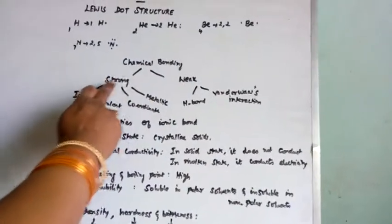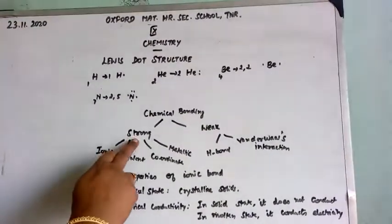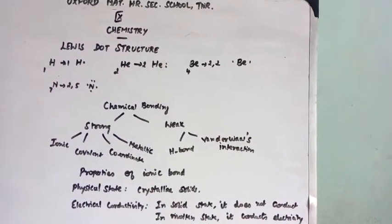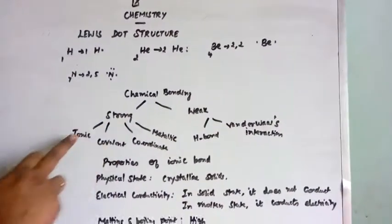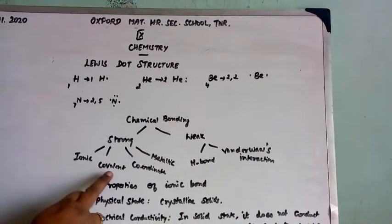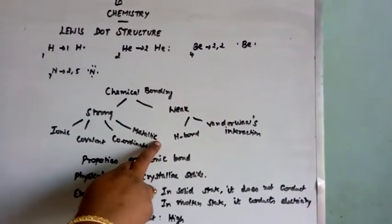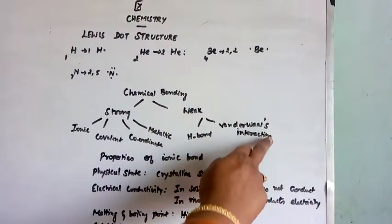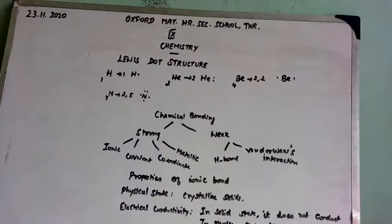In chemical bonding, generally it is of 2 types. One is strong bond, another one is weak bond. All these 4 bonds come under strong bond: Ionic bond, covalent bond, coordinate covalent bond, then metallic bond. Weaker bond means hydrogen bond and Van der Waals interaction.